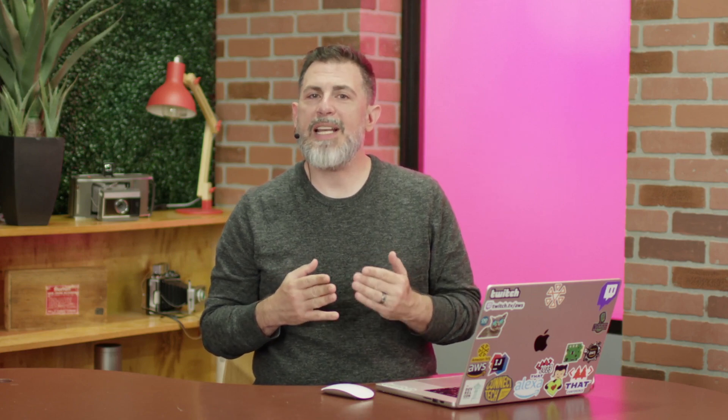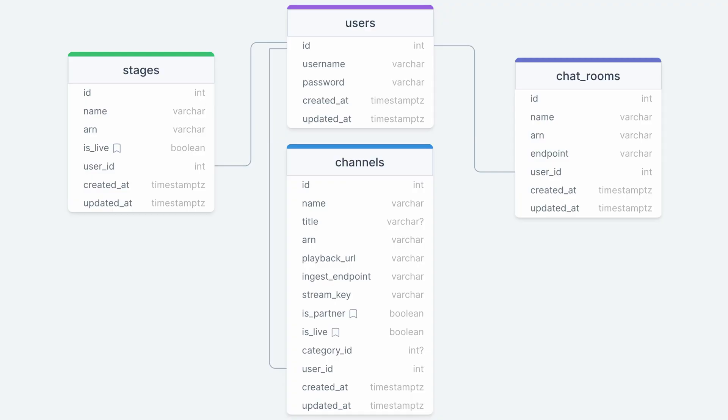The second category of resources are created and deployed on demand. This group of resources includes an Amazon IVS channel, chatroom, and stage for multi-host real-time live streams. The channel, chatroom, and stage resources all have a one-to-one relationship with a user, as illustrated in the following diagram.